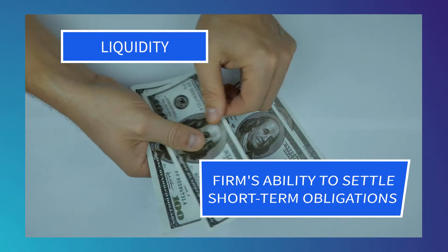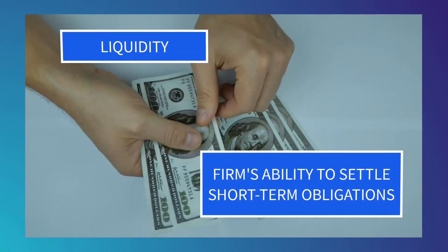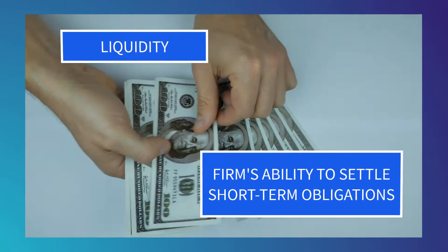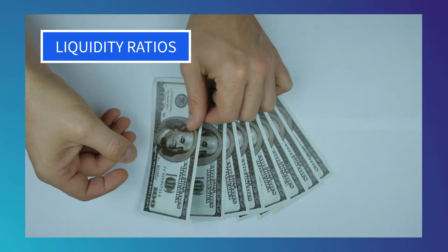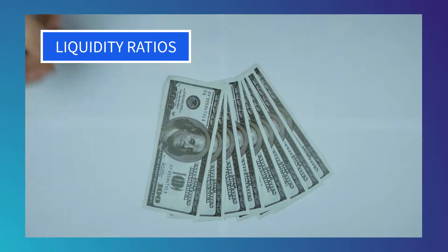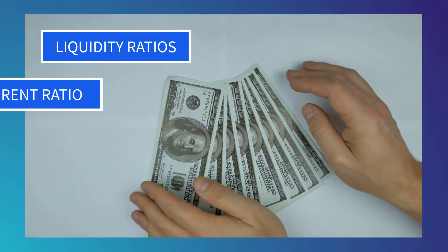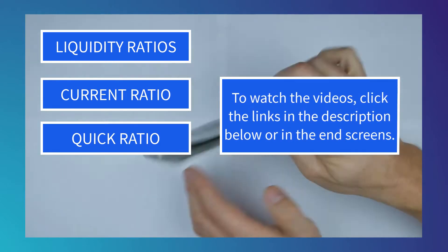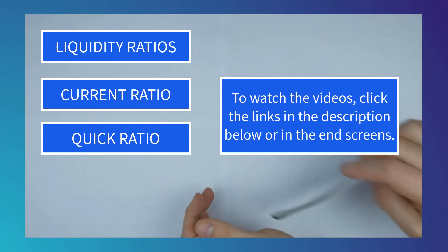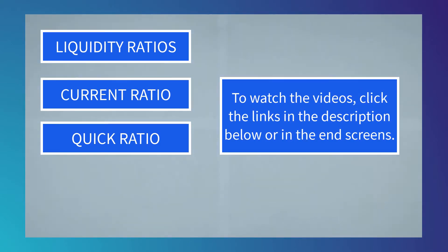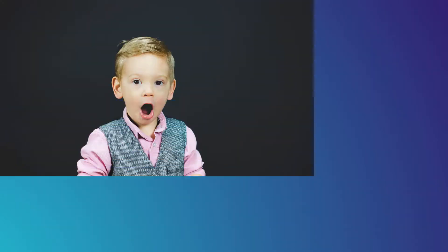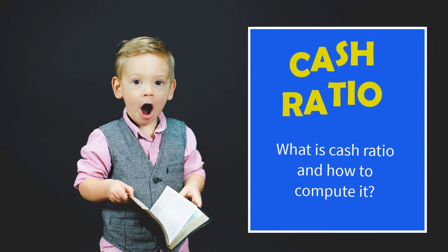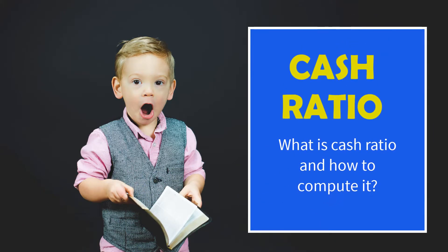Liquidity is the firm's ability to settle short-term obligations. Videos on the commonly used liquidity ratios, namely current ratio and quick ratio, can be seen from the links in the description below and also in the end screen. Today we will discuss another liquidity ratio named cash ratio.